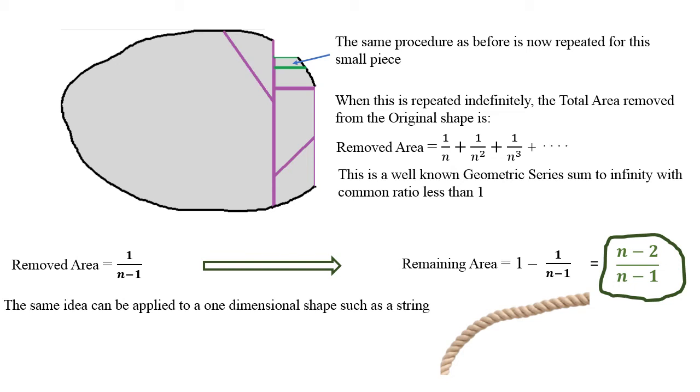If you apply the sum to infinity formula, this equals 1 over n minus 1. The remaining area will be, if the original area is 1, then take away that, you get this interesting formula: n minus 2 divided by n minus 1.